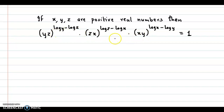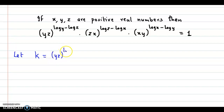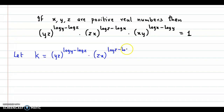Now let's focus on the left hand side. Suppose we consider this product — the left hand side product. Let this be equal to k. So let k be equal to yz raised to log y minus log z, into zx raised to log z minus log x, into xy raised to log x minus log y.